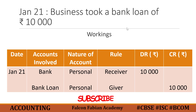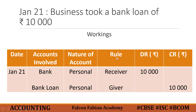For the first 20 to 25 transactions, follow this format. After that, you will be able to record directly into the journal. The columns in this format are: date, the two accounts involved, nature of account — that is, which class of account they belong to — then the rule, then the debit amount and the credit amount. All of these have been explained in detail in lesson number one.